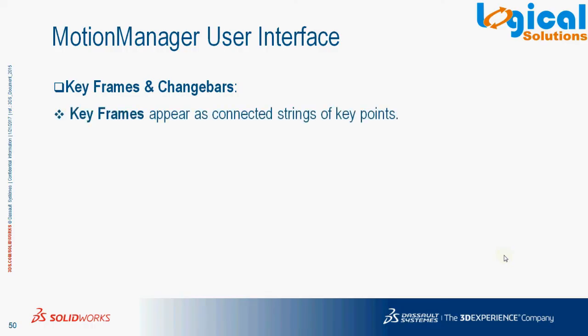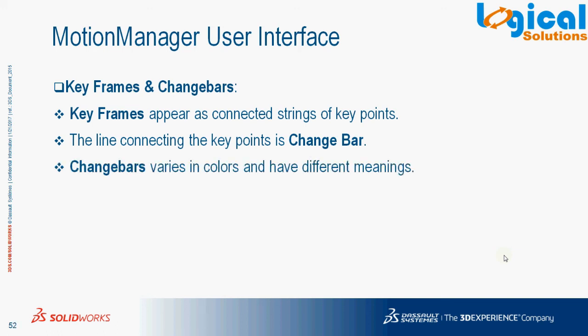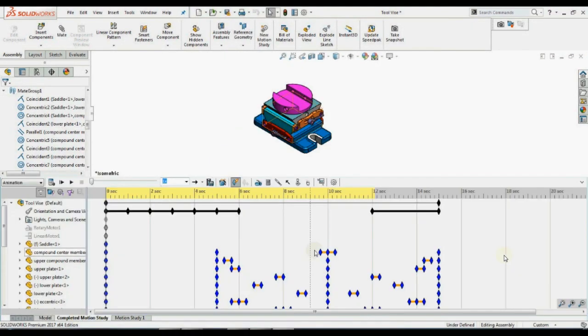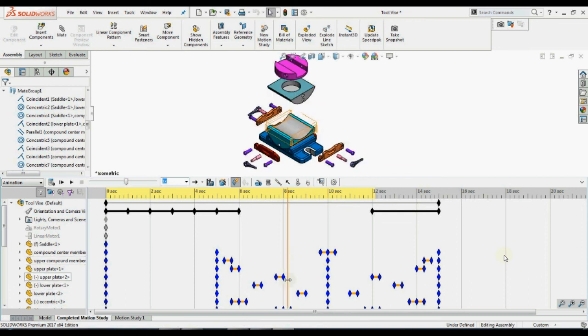Next, Keyframe and Change Bar. Keyframe appears as connecting strings of key points. The line that is connected between key points is called a Change Bar. The colors of the change bar vary and each color has a specific meaning, which will be discussed in other tutorials on animation. As you can see, the key points are connected by a bar called the change bar, and you can also observe various change bars in this example.